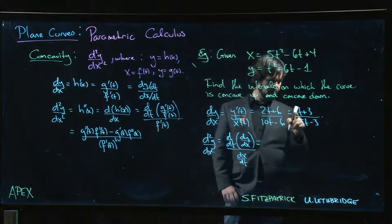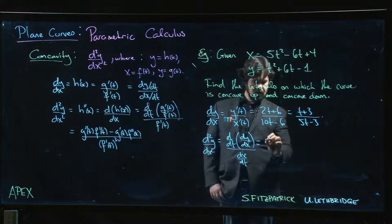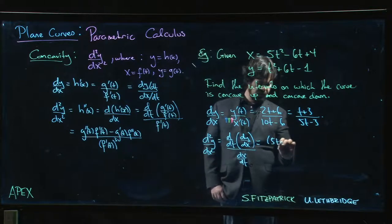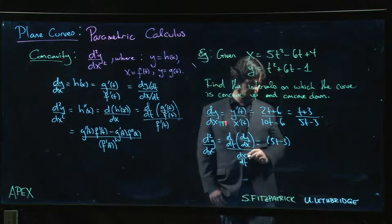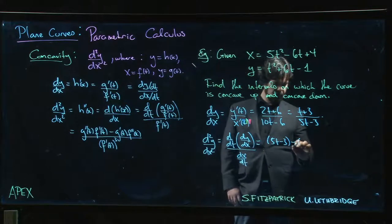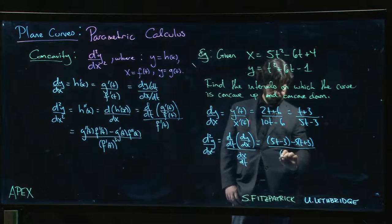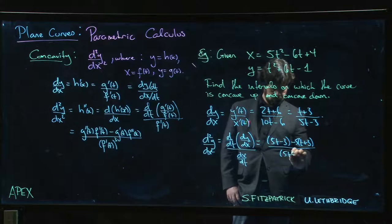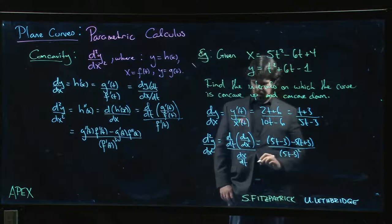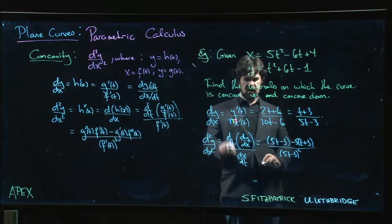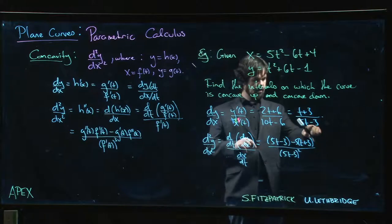Derivative of the top is just 1 times the bottom, so we get 5t minus 3, minus the top times the derivative of the bottom, we get 5, times t plus 3, divided by the bottom squared.